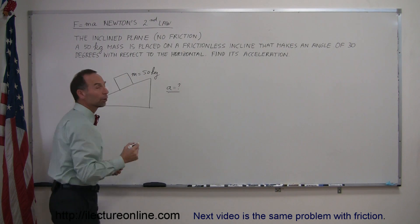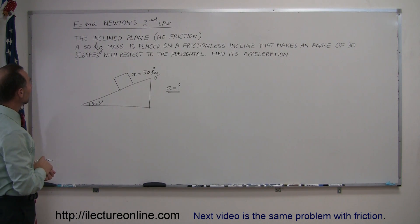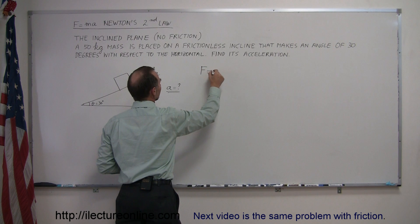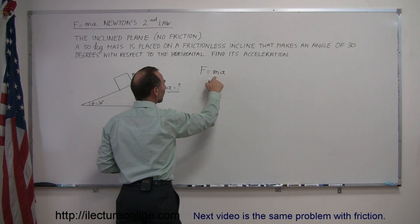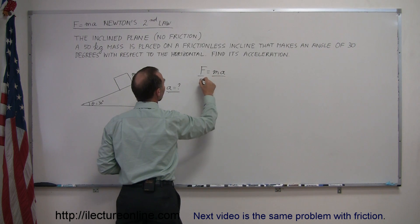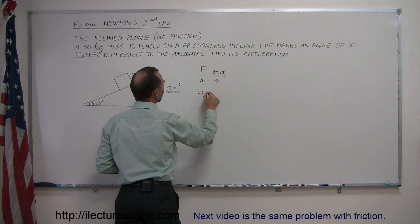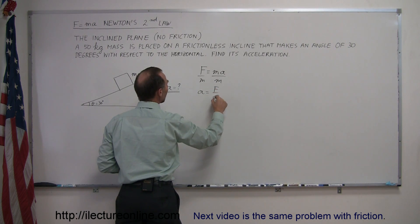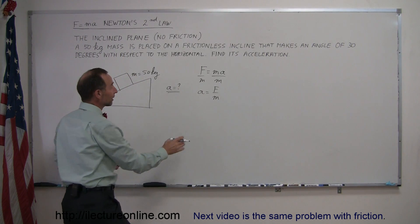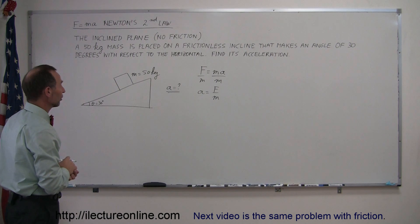And we want to find the acceleration of that mass. So a equals is what we're looking for. Since we have the equation F equals ma, and we solve that equation for a, we divide both sides by m. So we get acceleration is equal to F over m. So what we need then is we need to find the force that acts on this object, and we divide that force by m, and we'll get the resulting acceleration.